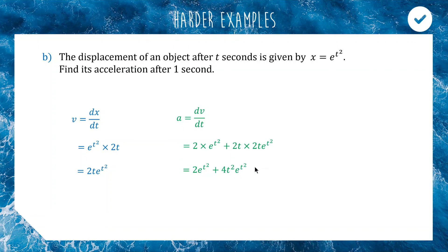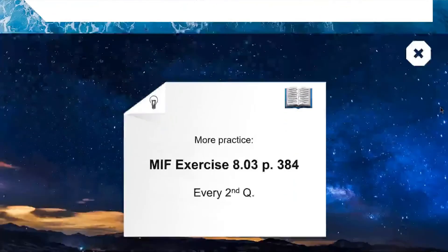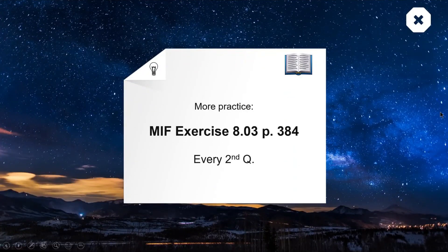Now we substitute t equals 1 into the acceleration expression. We get 2e to the 1 plus 4 times 1 squared times e to the 1, which is 2e plus 4e, simplifying to 6e. Since e is approximately 2.7, the acceleration after one second is 6 times e. There are plenty of exercise questions for you to practice in section 8.03. If you're having trouble, please send me a message. Thanks so much for watching and I'll see you next time!